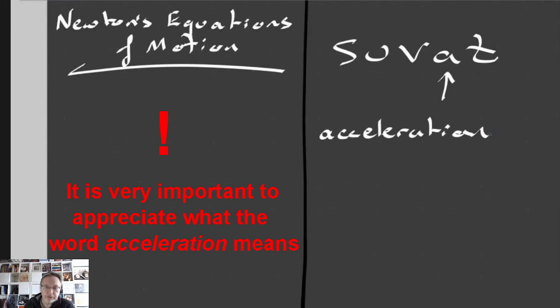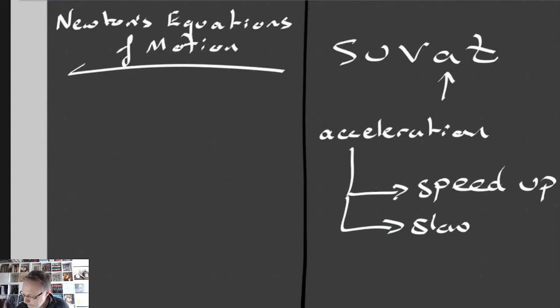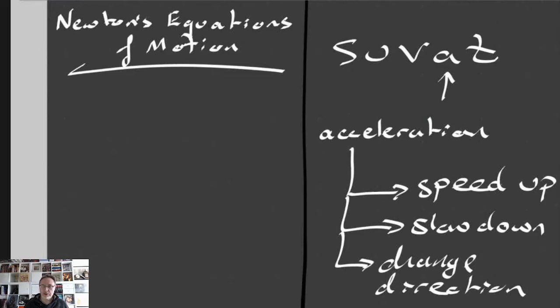Before we get started, it's worth focusing on acceleration. The word acceleration, in a very clear way without being too technical, means one of three things: it either means to speed up, to slow down, or to change direction. People who don't know much about physics think acceleration just means to speed up, but to a physicist, if you apply the brakes and slow down, you are accelerating — it's just that the value is negative. And if you change direction, acceleration is also happening.